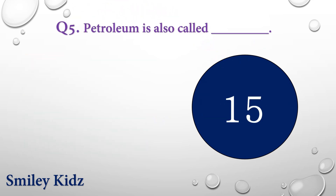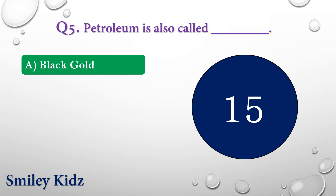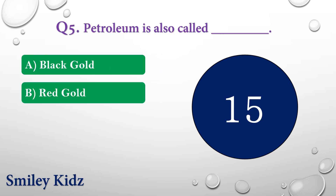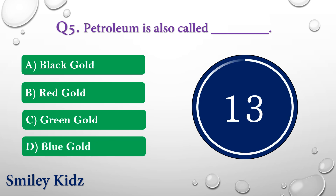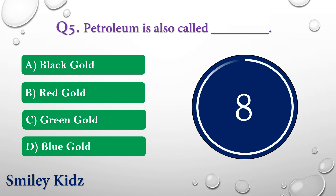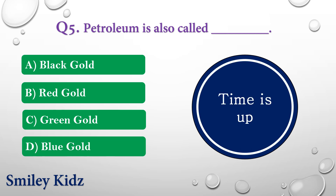Question number five: Petroleum is also called dash. The options are: A) Black gold, B) Red gold, C) Green gold, or D) Blue gold. Your time is up and the right answer is option A — Black gold. Petroleum is also called black gold.